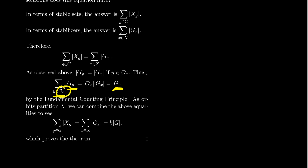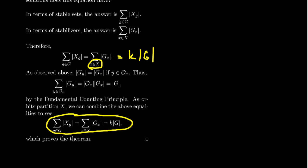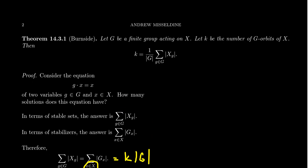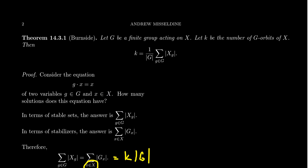This holds for any orbit whatsoever. If we range over all elements of X, we get some number of copies of |G| — one copy per orbit, which is what we called k. Dividing both sides of the equation by the order of G gives us Burnside's theorem, which we saw at the top of the screen. Burnside's theorem comes as a consequence of this very nice combinatorial proof.